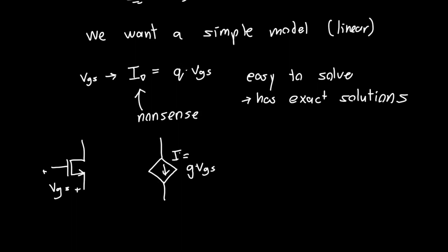And I use G because this looks kind of like Ohm's law, right? I equals GV, or Ohm's law in conductance form. So, okay, how do we get that?